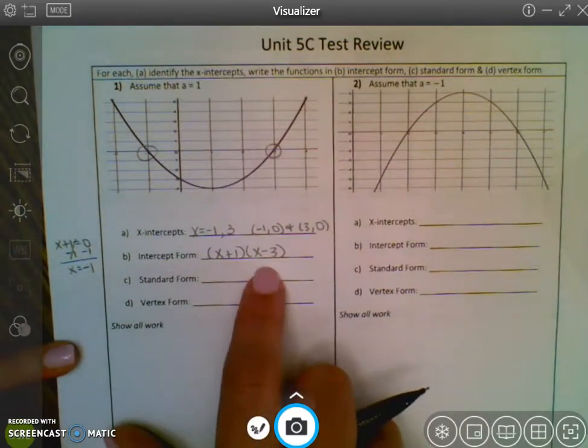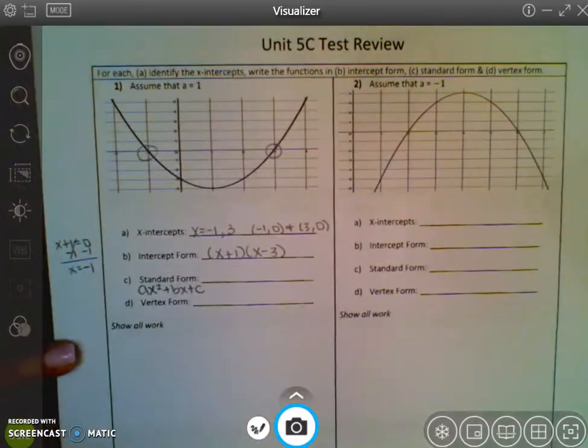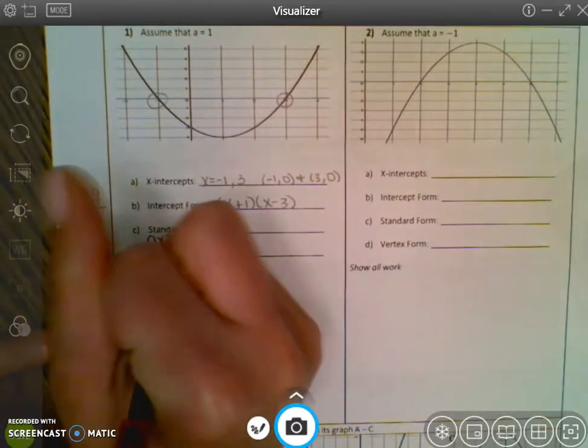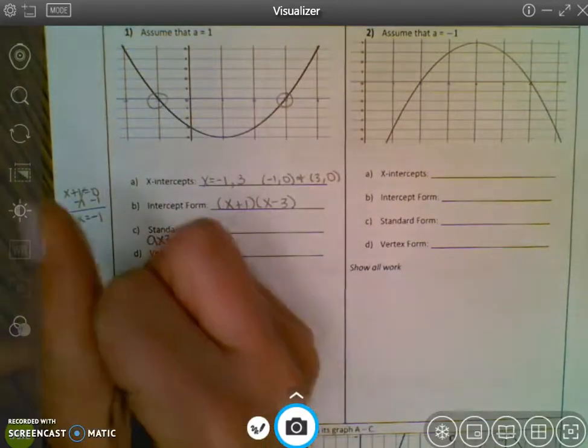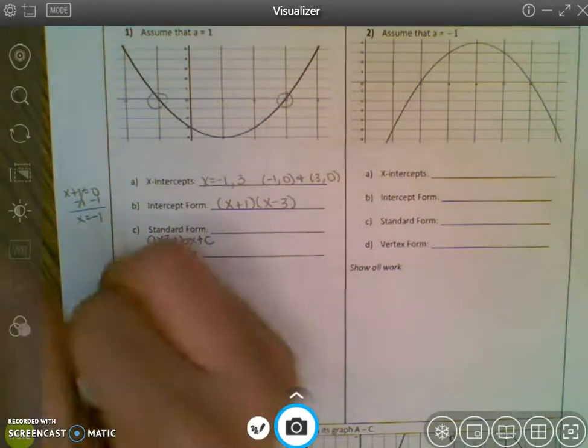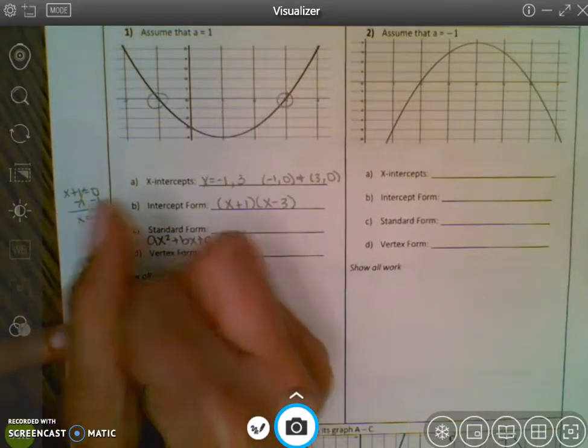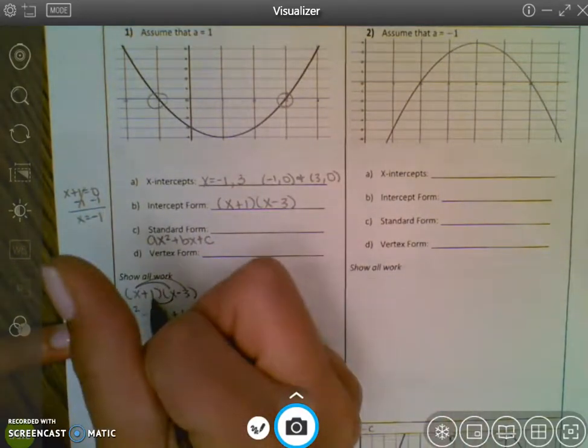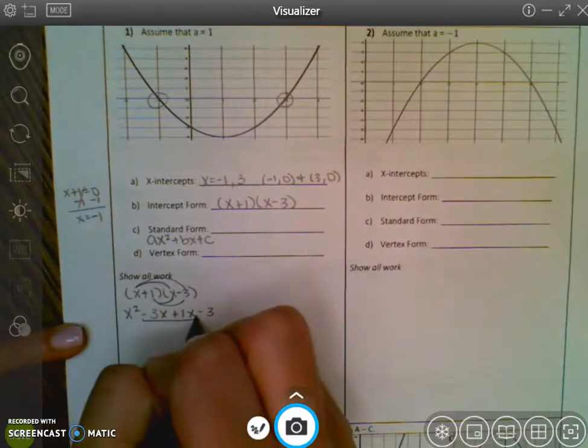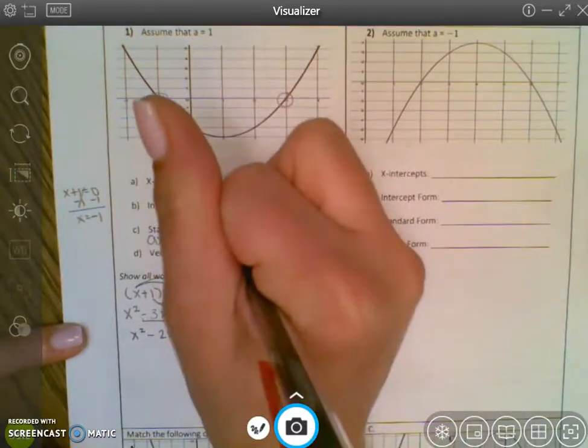Standard form is when you multiply all of this out. Standard is when it looks like ax squared plus bx plus c. I'm going to show my work down here. So x plus 1, x minus 3, this is when you're going to FOIL, or rainbows, unicorns, and sparkles, as Ms. McGaugh said. So x times x, that's x squared. x then has to multiply by negative 3, so it's negative 3x. 1 has to multiply by x, which is a positive 1x. And then 1 has to also multiply by that negative 3, which is a negative 3. Then I can add like terms, so that's x squared minus 2x minus 3. And that's standard form.